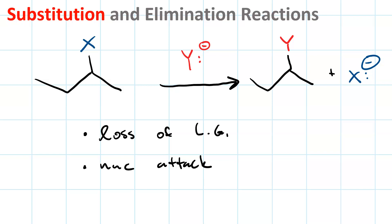The nucleophilic attack is what puts the Y on your carbon-carbon backbone and the loss of the leaving group is what gives you the X anion. We exchange one functional group for another. The reagent is a nucleophile and it involves loss of a leaving group and nucleophilic attack.